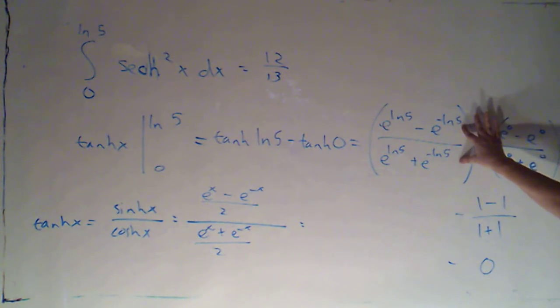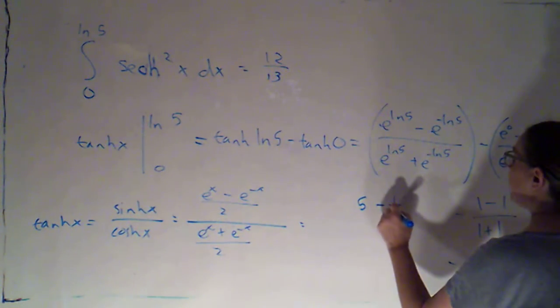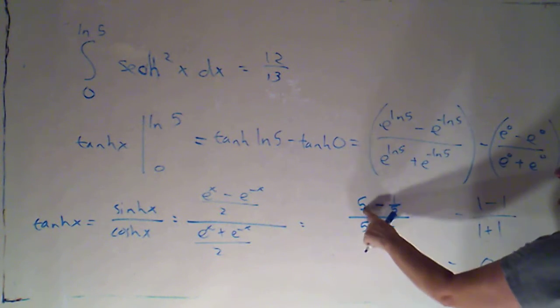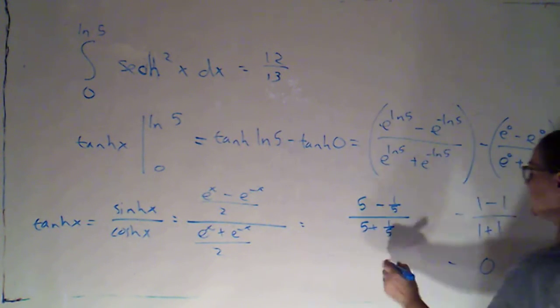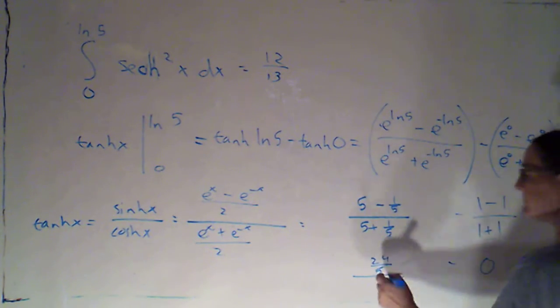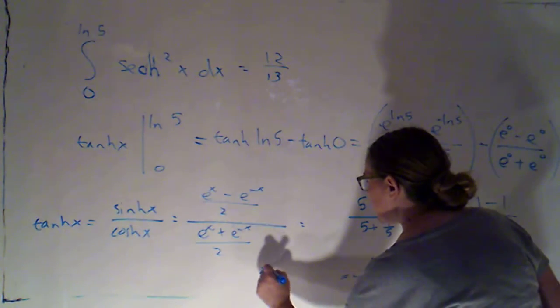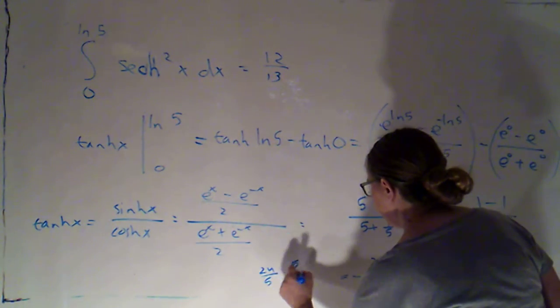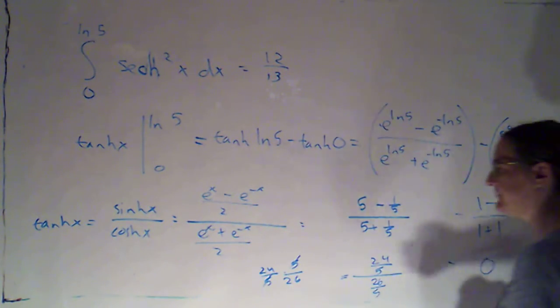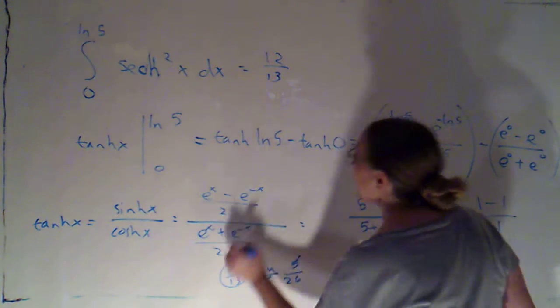So this is what's going to contribute to my answer. So that's 5 minus 1 fifth over 5 plus 1 fifth. That would be 25 fifths minus 1 fifth is 24 fifths over 25 fifths plus 1 fifth would be 26 fifths. That's going to be 24 fifths times 5 twenty-sixths. Those fives cancel, and then I can cancel a factor of 2, and I will just get 12 over 13.